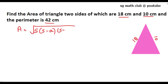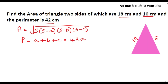We use the formula: area = √(s(s − a)(s − b)(s − c)). The perimeter is given as 42, so a + b + c = 42 cm. The semi-perimeter will be 42 divided by 2, which equals 21 centimeters.